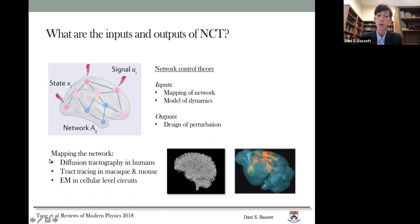First, the mapping of the network. So in a human, we would typically use diffusion tractography to map out the structural connectome in a human and use that as one of the inputs to network control theory. We could instead, however, also use tract tracing in the macaque or mouse or EM in cellular level circuits.